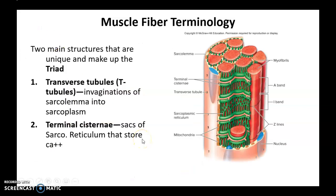This is another representation showing the transverse tubules and the terminal cisternae, pulled from another textbook. The big circular structure is a muscle fiber, and the pink membrane that surrounds it is the sarcolemma.